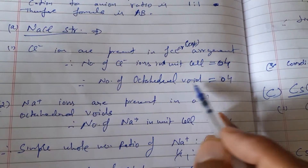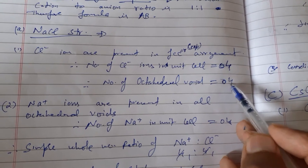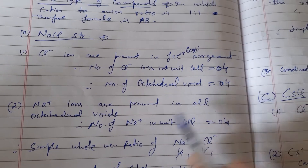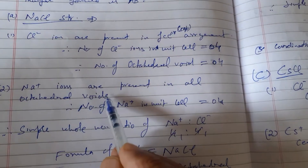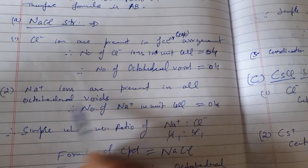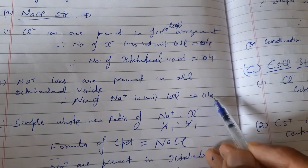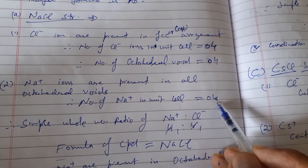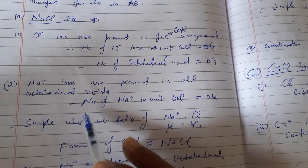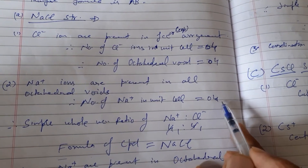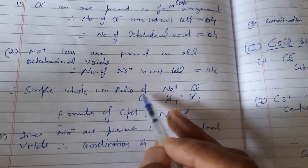The number of chloride ions in the unit cell is four, since FCC gives z = 4. The number of octahedral voids is always equal to z, so they are also four. Sodium ions are present in all four octahedral voids, so the number of sodium ions in the unit cell is also four.